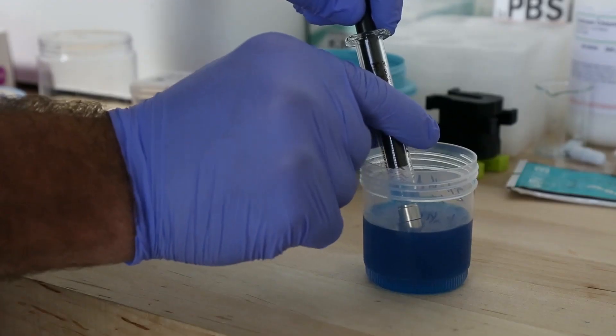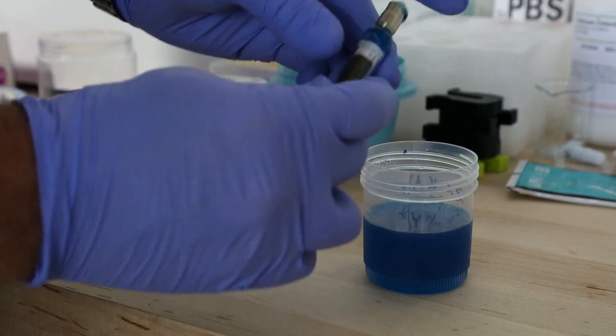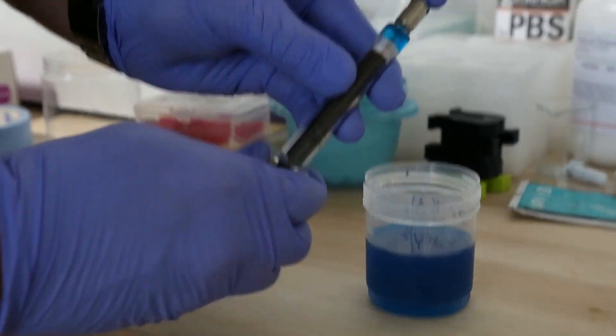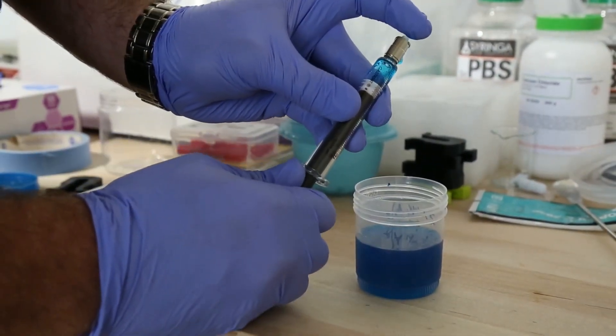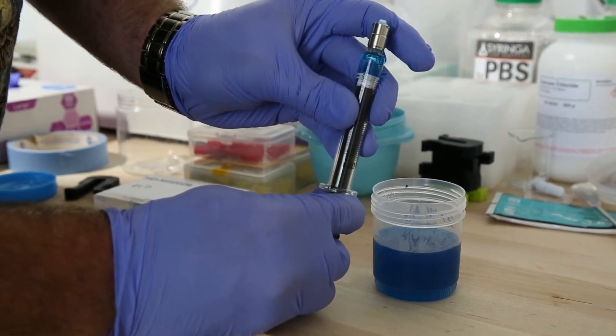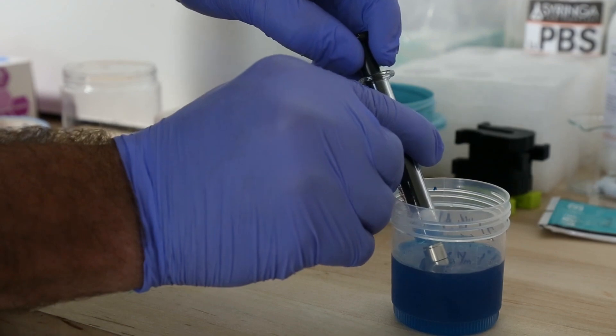So now we're gonna load our 5 milliliter gas-tight syringe. We've got a big air bubble on the top, so I'm gonna stop, flip it upside down, put my finger over the top, pull vacuum, and release. And now I should be able to push the air bubble out the top and then continue filling it.